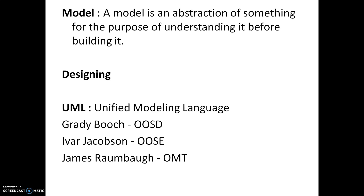Why the name 'unified' in UML? Earlier we had three languages: object-oriented software development by Grady Booch, object-oriented software engineering by Ivar Jacobson, and object modeling technique by James Rumbaugh. All three were different and there was no standardized language to model object-oriented concepts. Later, a decision was taken to combine all three, and they came up with Unified Modeling Language — hence the name 'unified.'